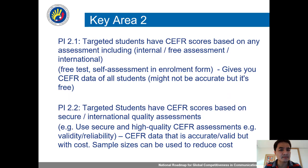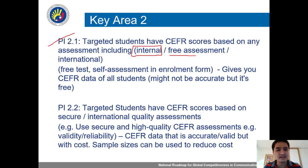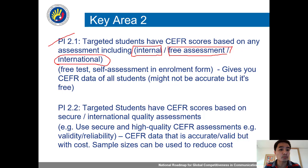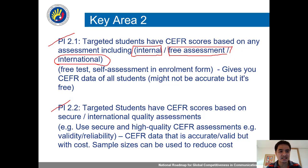Key area two: 2.1 is that students have scores based on any assessment. We discussed the self-assessment grid that you can give to the registrar — just ask them to add it when they admit students so they can write whether they're A1, A2, B1, or B2. There's a self-assessment grid, a free assessment, or a standardized test — two out of the three options are free. 2.2 is that for a post-test, secure test, or test to graduate, you can no longer use free things because it introduces bias when it's tied to a decision. When it's tied to a decision, students should take something proctored so their scores have real meaning.